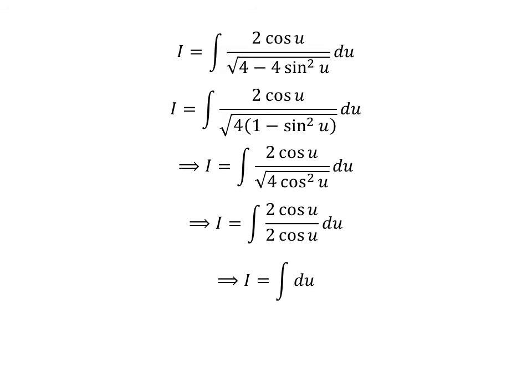Cancelling out the common factor 2 times cosine of u in the numerator and denominator gives us I is equal to the integral of 1 with respect to u. We know the integral of 1 is equal to u, so I is equal to u plus capital C. Capital C is the arbitrary constant of the indefinite integral — never forget to add this constant.